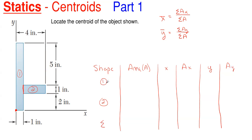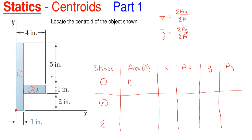Looking at shape number one first: we're going to get the area for shape number one only — we do not care what shape number two is doing. The area will be one inch times the height, which is five plus one plus two, equaling eight. So the area for shape number one is eight square inches.